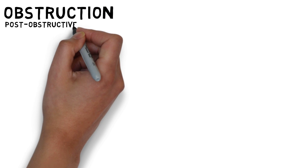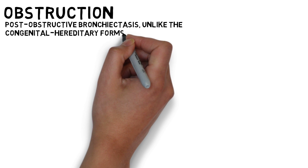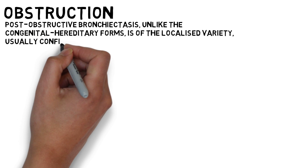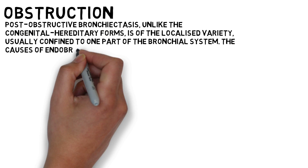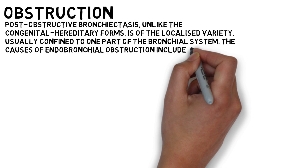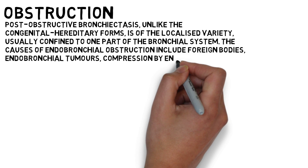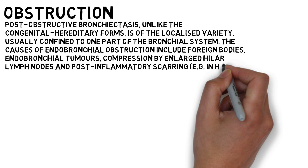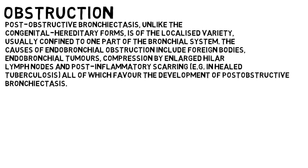Post-obstructive bronchiectasis, unlike the congenital and hereditary forms, is of a localized variety, usually confined to one part of the bronchial system. The causes of endobronchial obstruction include foreign body, endobronchial tumors, compression by enlarged hilar lymph nodes, and post-inflammatory scarring, for example in healed tuberculosis, all of which favor the development of post-obstructive bronchiectasis.